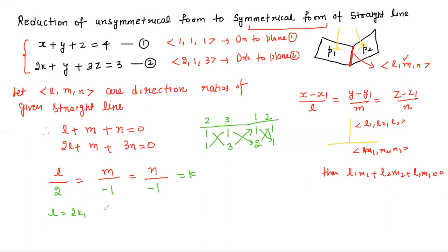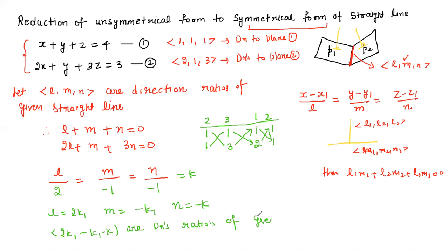So the value of L = 2k, M = −k, and N = −k. So the direction ratios of the given straight line are 2k, −k, −k, or equivalently 2, −1, −1. These are the direction ratios of the required straight line.